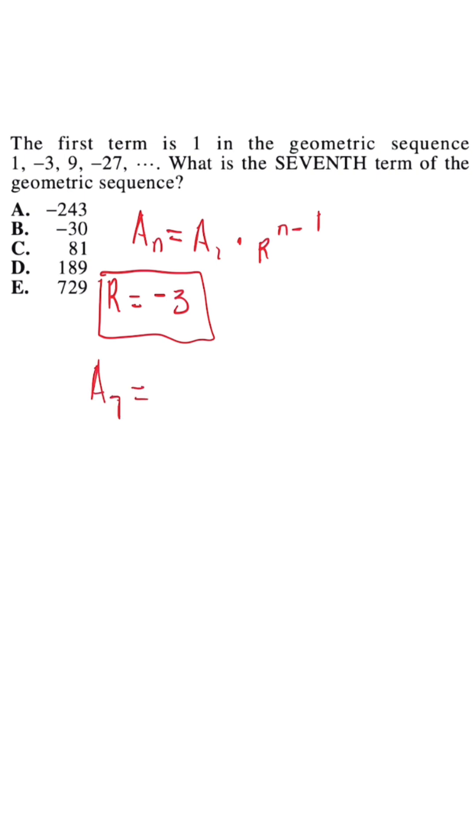we have a_7 is equal to the first term 1 times negative 3 to the 7 minus 1 power. So we're basically taking negative 3 to the 6th power.